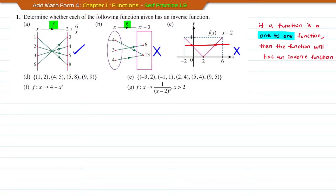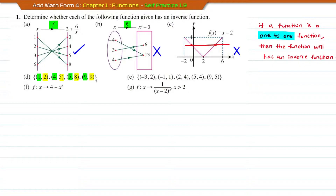Now for question D, these are ordered pairs. The first number, highlighted in green, is the object, and the one highlighted in yellow is the image. So 1 maps to 2, 4 maps to 5, 5 maps to 8, and 9 maps to 9. Each object only maps to one image. Therefore, this is a one-to-one function, and this function will have an inverse function.